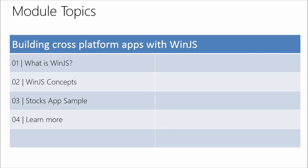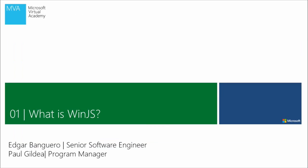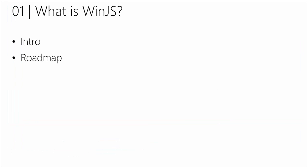I'm from Colombia, so I will add Spanish to the list of accents that you heard this morning. So let's get started. What we're going to cover today is a little bit about what WinJS is and what's going on in WinJS. We're going to do a deep dive into some WinJS concepts, especially around our control model. And then once we've learned those things, I'm going to hand it over to Edgar, and Edgar's going to show us a demo app that we built using Apache Cordova and WinJS.